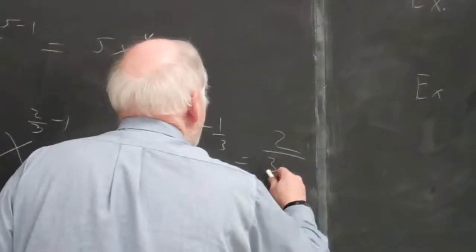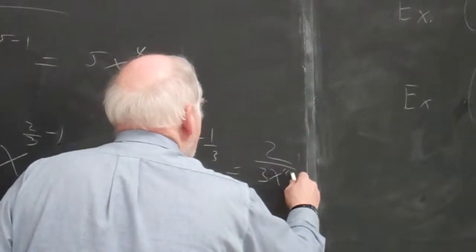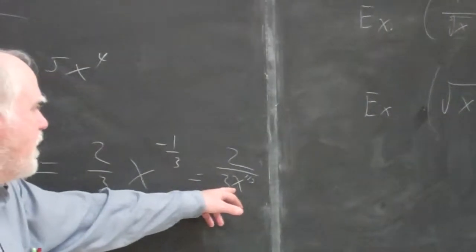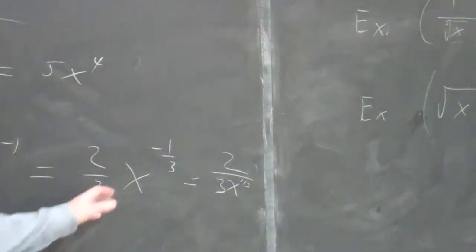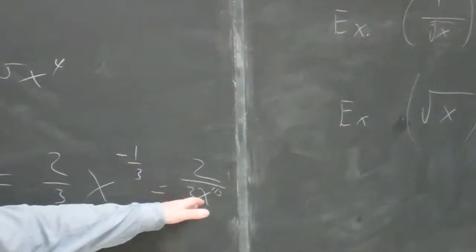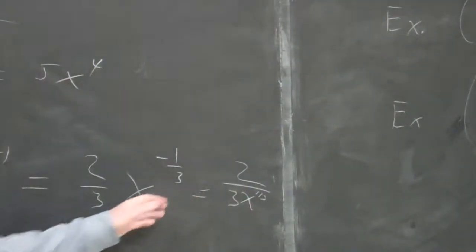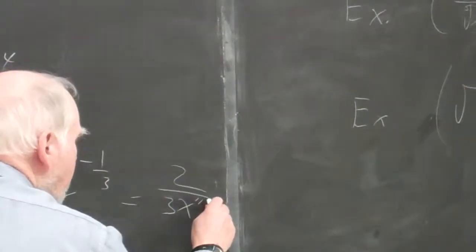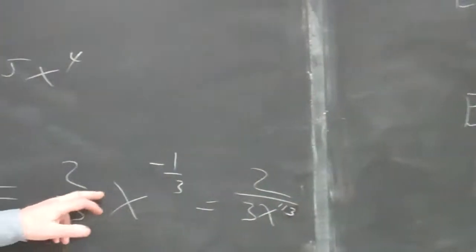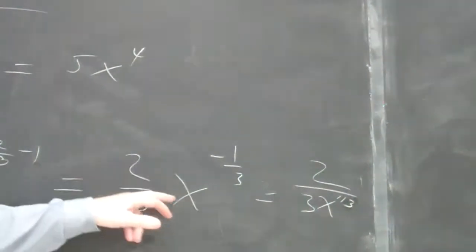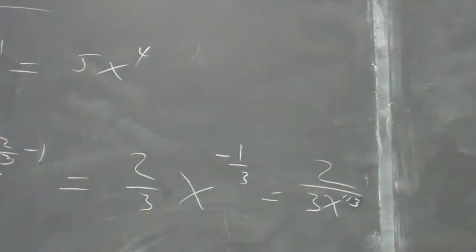You might want to bring it down and do it as 2 over 3 times x to the 1/3 power, which is—I could use a cube root symbol there too. This is a little better form if I want to evaluate it at a number. That's 1/3, by the way. This is the answer, and this is just a little bit better form.